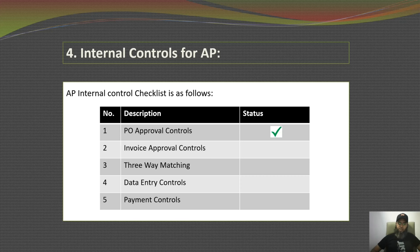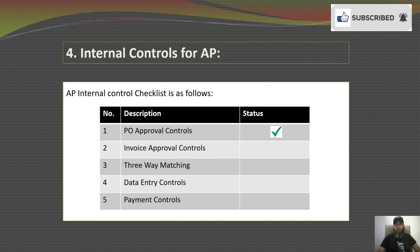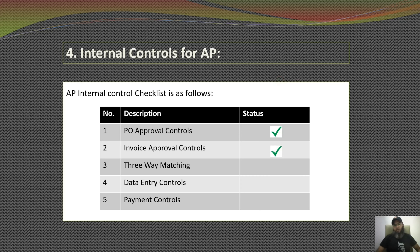The next internal control is invoice approval controls. Each invoice must be paid — this is relatively simple in a PO process because the PO has already been approved. However, for non-PO invoices with no pre-approval, those invoices need to go through an invoice approval process within the buying organization before being paid.